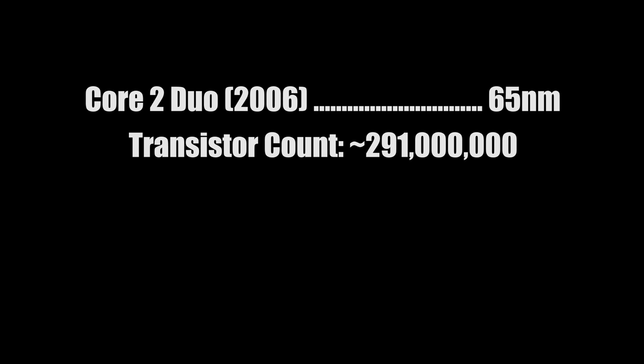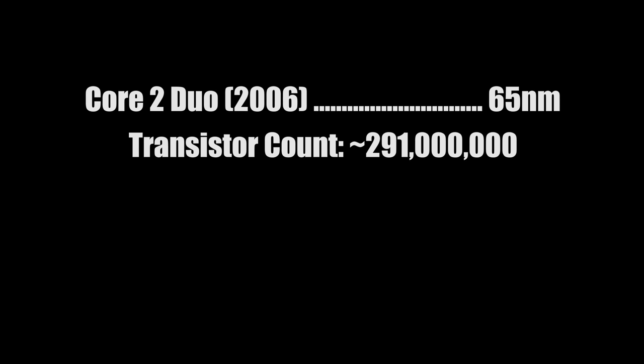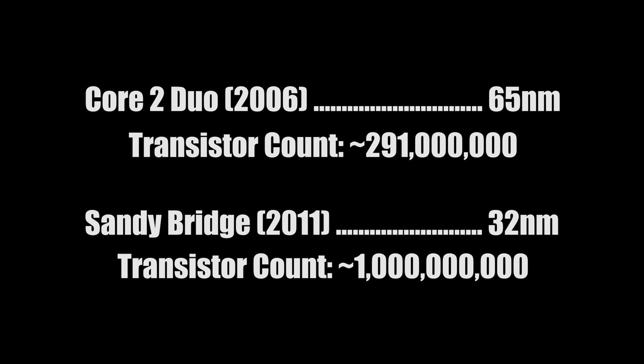In 2006, the Intel Core 2 Duo boasted a 65nm process. Five years later, with the release of Sandy Bridge, the process had shrunk to 32nm, allowing for insane transistor counts per die. Just three years later we were on the 22nm process. And today we have Sky Lake, Kaby Lake, and Coffee Lake chips, along with AMD's Ryzen CPUs, all boasting the modern 14nm process.